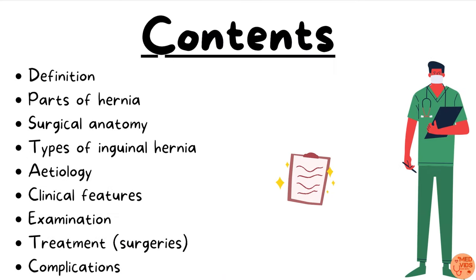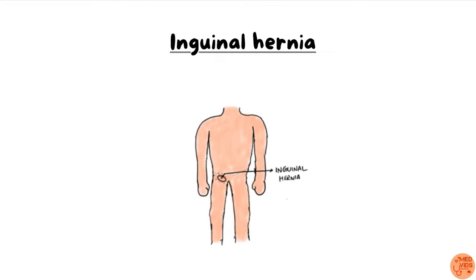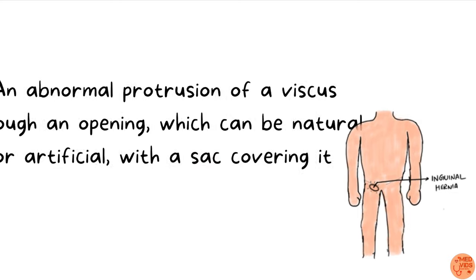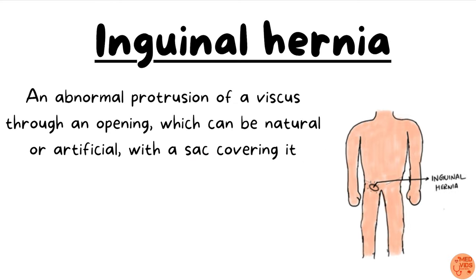In this video, we'll discuss inguinal hernia under the following headings. What is inguinal hernia? Inguinal hernia is an abnormal protrusion of a viscus through an opening — which can be a natural or artificial opening — with a sac covering it. In order to understand this definition of inguinal hernia, we have to discuss the sac and contents of inguinal hernia in detail.